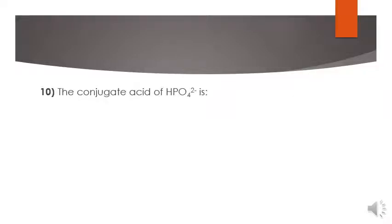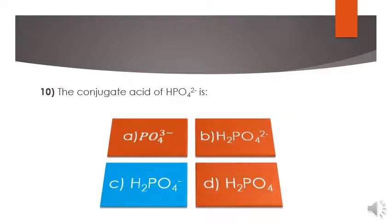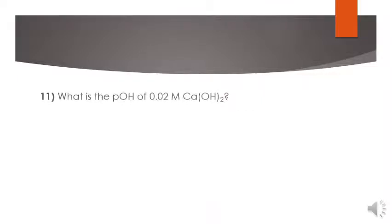MCQ number 10: the conjugate acid of HPO4 2 negative is. The conjugate acid is option number C, H2PO4 negative.